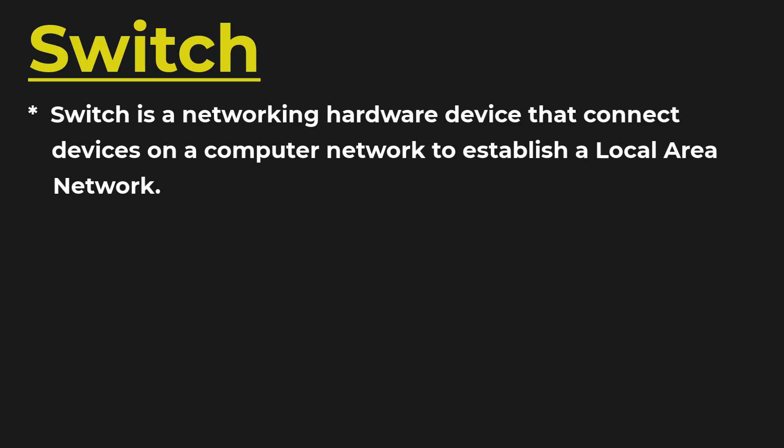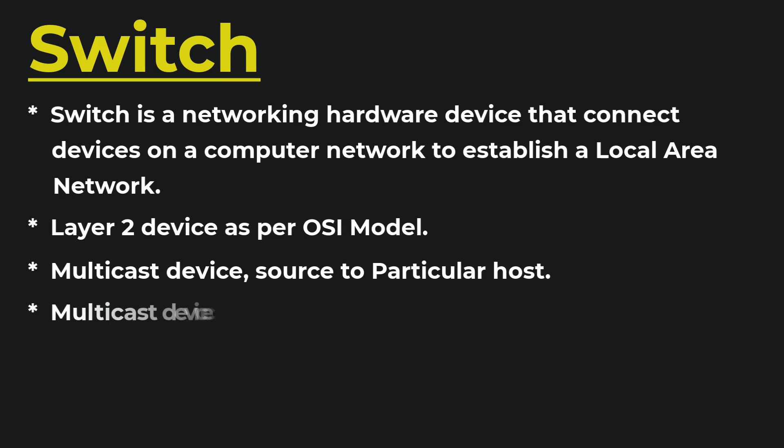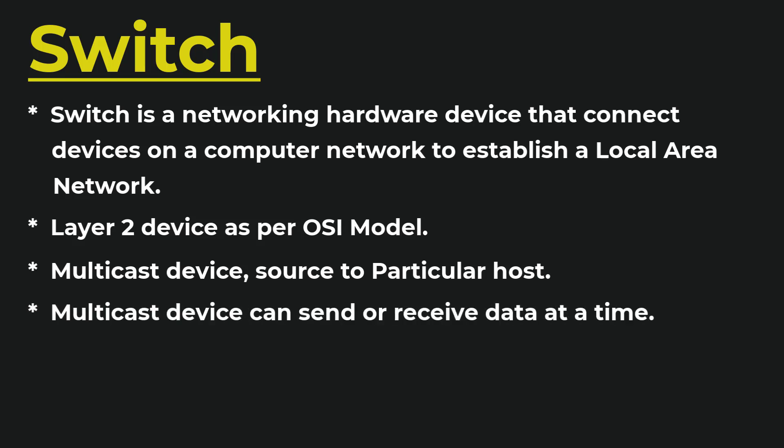The first difference is that a hub is a layer 1 device as per the OSI model, and a switch is a layer 2 device. Second, a hub is a broadcast device — it broadcasts data received on all other ports — whereas a switch is a multicast device and sends data from one source to a particular host. Third, in a hub only one device can send data at a time, but in a switch multiple devices can send or receive data at a time.